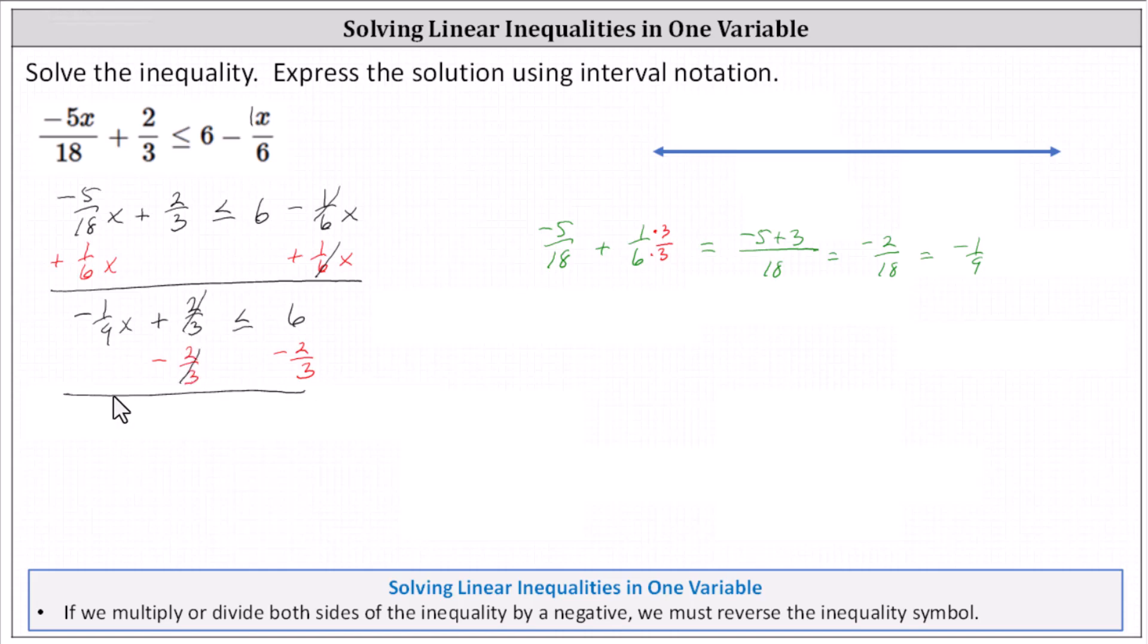Simplifying, we have -1/9 x ≤ 6 - 2/3. Let's work this out on the side. Let's write 6 as a fraction with the denominator of 1. Notice the least common denominator is 3. We multiply 6 by 3/3. We have a common denominator of 3. And the numerator is 18 - 2, which is 16. We now have -1/9 x ≤ 16/3.